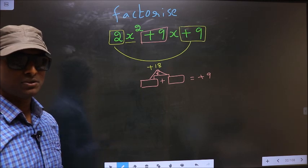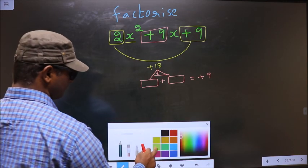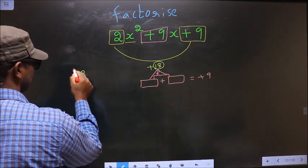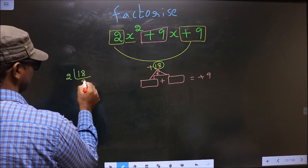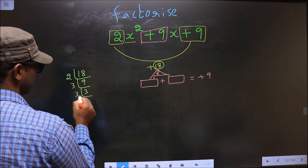To get those 2 numbers we should take LCM of 18. So I start with 2, 9, now 3, 3, 3 and 1.